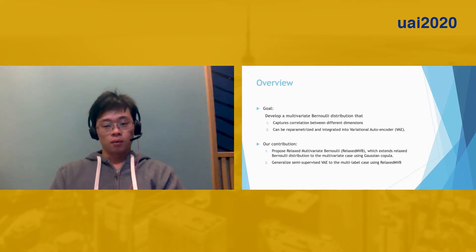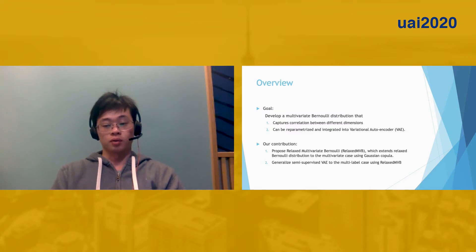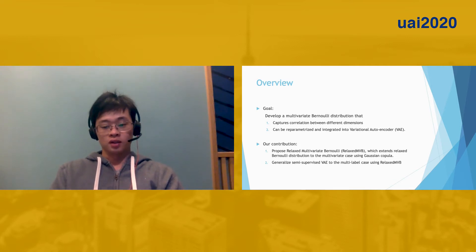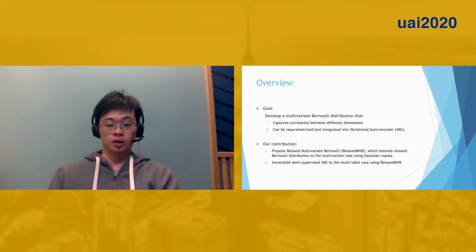The goal of our work is to find a multivariate version of Bernoulli distribution with two main properties. First, we would like this multivariate distribution to be able to capture correlation between different dimensions. And secondly, we would like this distribution to be reparameterizable so that it could be used in deep generative models such as variational autoencoder.